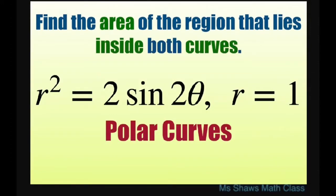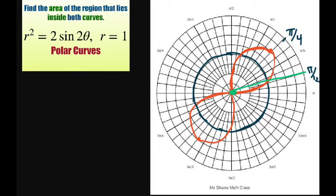Hi everyone. We're going to find the area of the region that lies inside both curves. We have a lemniscate and a circle. I just did a quick sketch. It's probably better if you do this in the calculator so we can find our limits of integration.